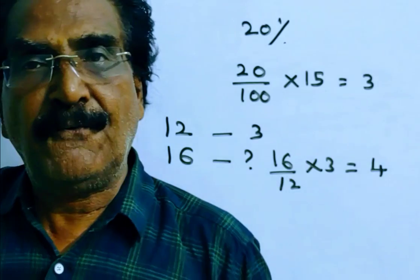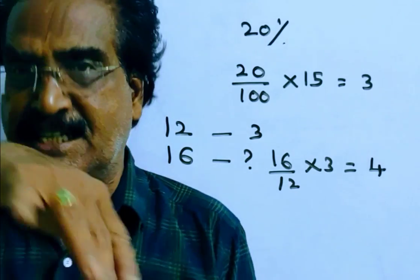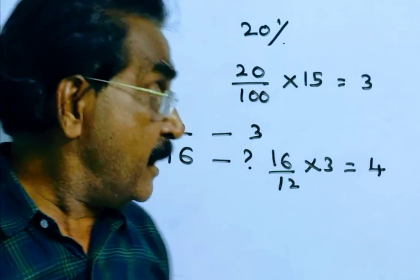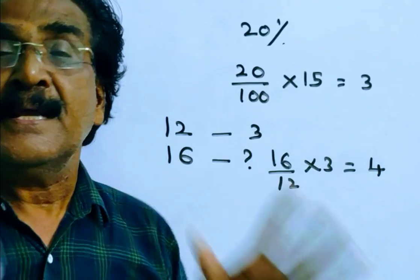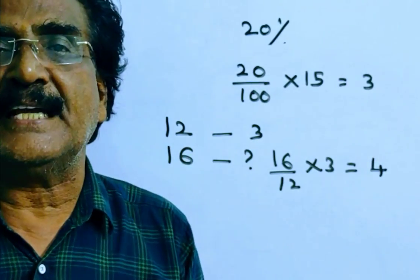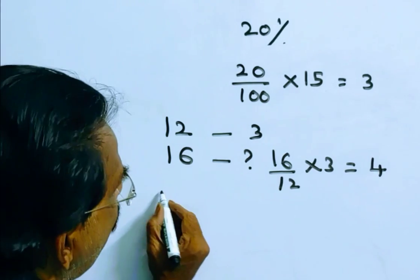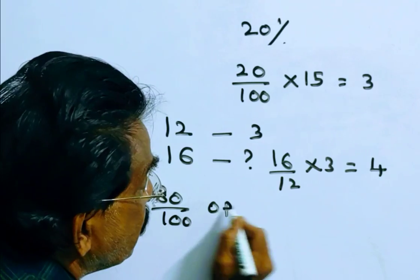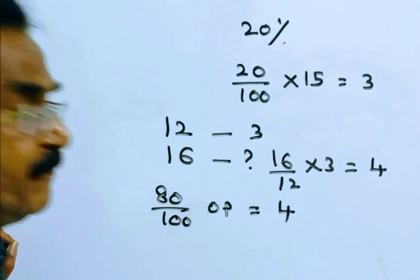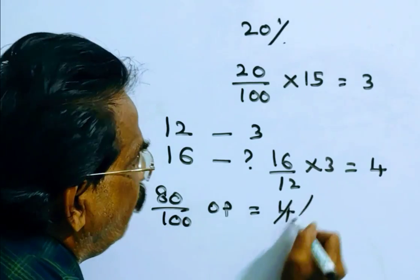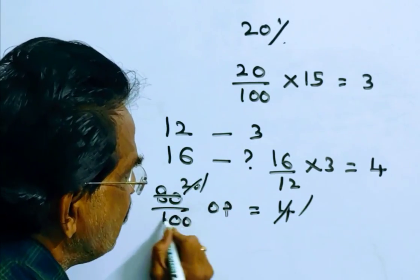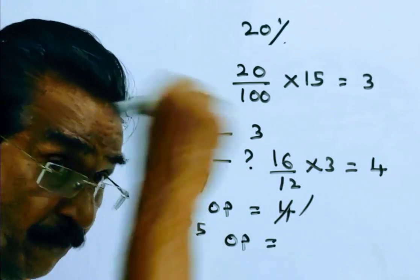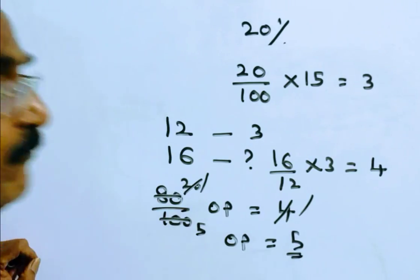But we want the original price of 16 mangoes, that is before the reduction. The reduction is 20 percent, which means this 4 rupees is 80 percent of the original price. So the original price of 16 mangoes before reduction is 5 rupees.